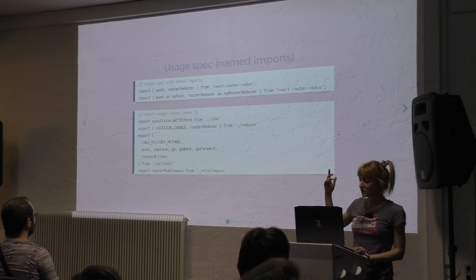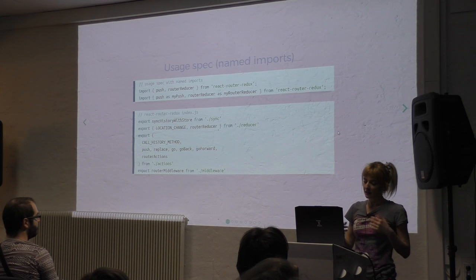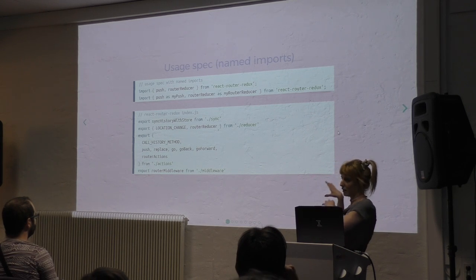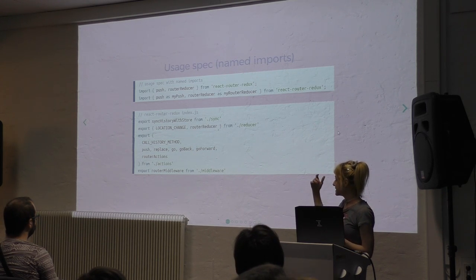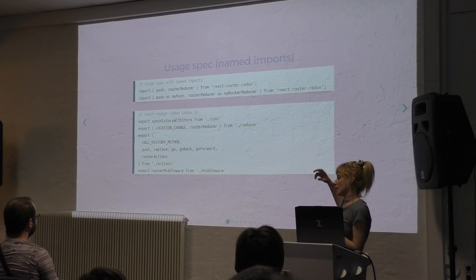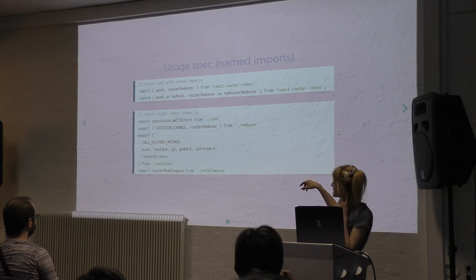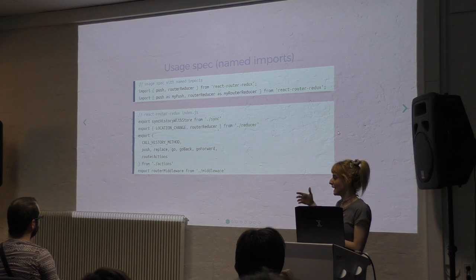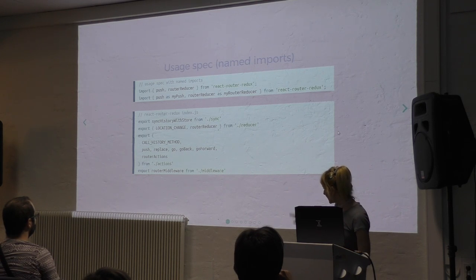Then you're going to want to think about the usage spec. This is the way that React Router Redux suggests you use it. Below, you see the index of this library. Above is the way you would include it in your own application — you would destructure it this way. You can also see how you would behave if you wanted to rename these functions. The reason you can do that is because the index is actually exporting all these functions. In case you want to allow people to use named imports, you would do it this way.